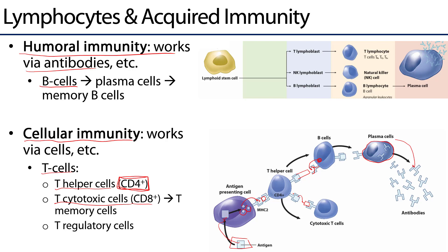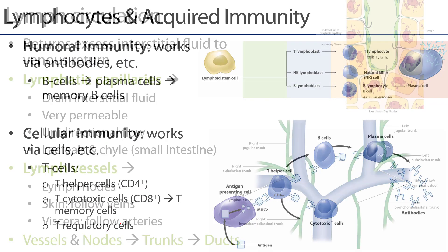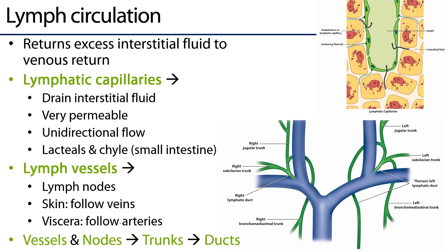Some T cells survive and become memory T cells, circulating through the body ready to destroy that antigen if encountered again. There are also T regulatory cells, sometimes called T regs — previously called T suppressor cells — that are important for regulating immunity against oneself. These T lymphocytes can exist in both the bloodstream and the lymphatic system.